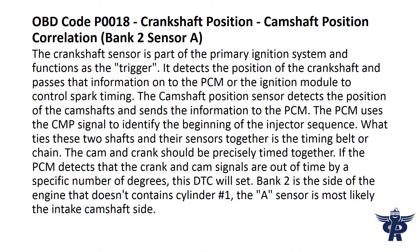OBD Code P0018 - Crankshaft Position Camshaft Position Correlation Bank 2 Sensor A. The crankshaft sensor is part of the primary ignition system and functions as the trigger. It detects the position of the crankshaft and passes that information onto the PCM or the ignition module to control spark timing.